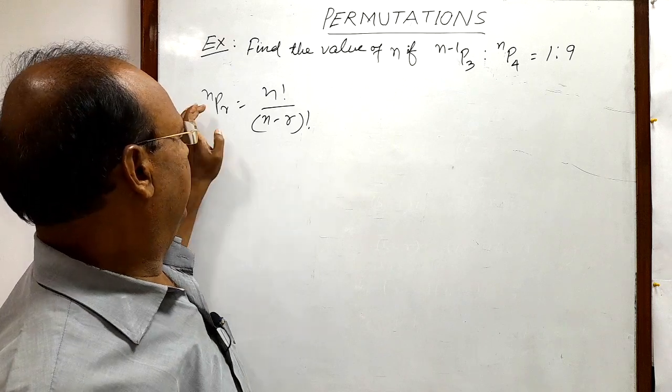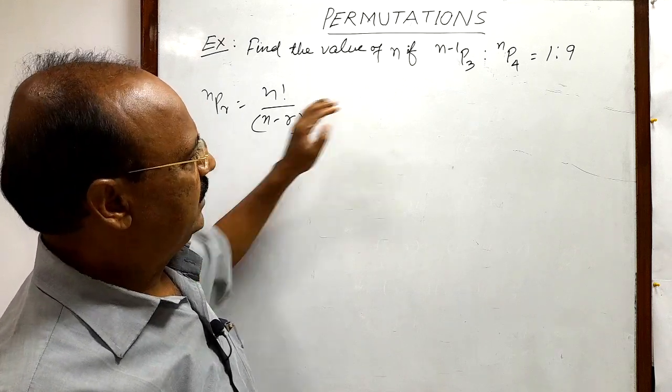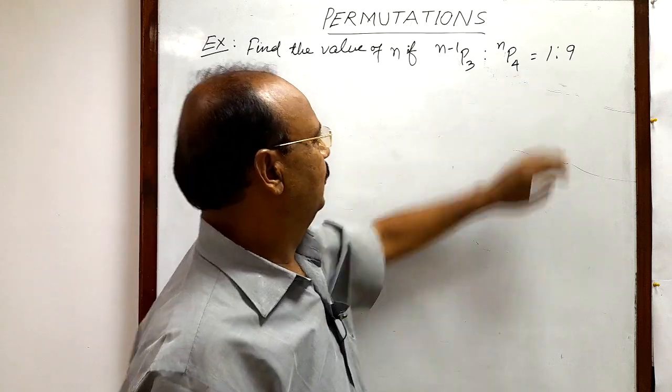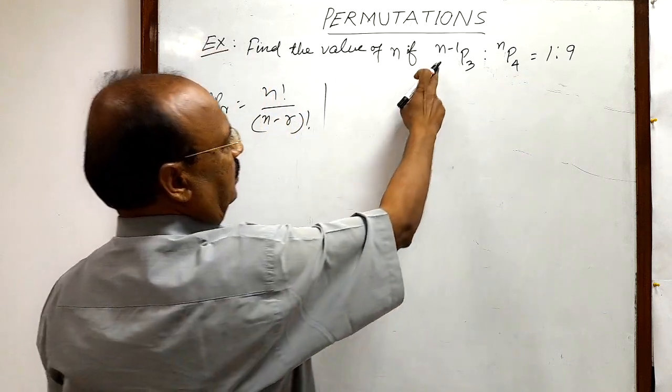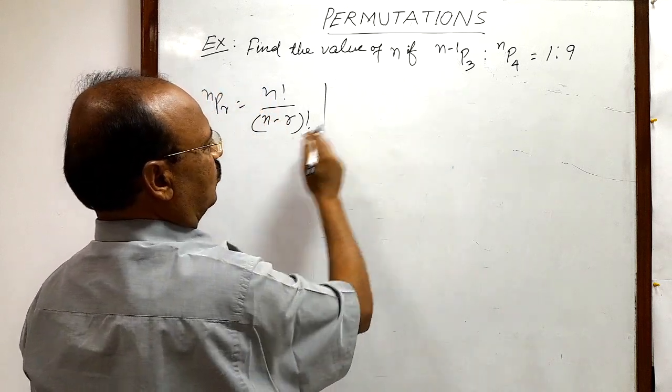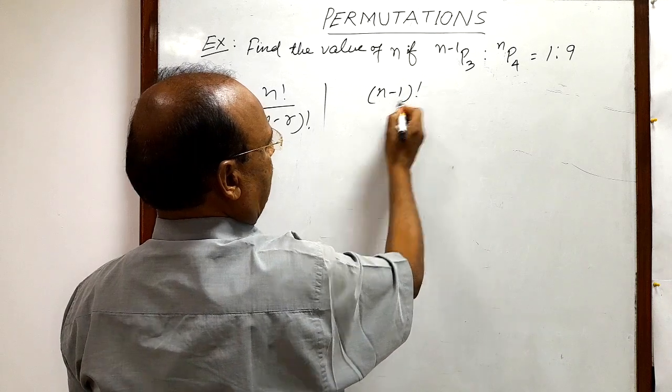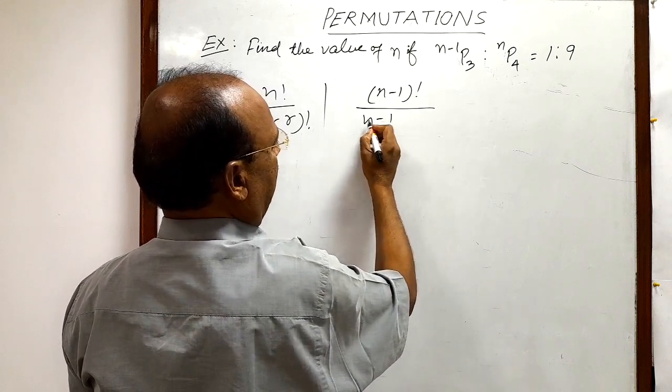Let us solve this one. Here, (n-1)P3 can be written as, by using this formula, (n-1)! divided by [(n-1) - 3]! because in place of n we have n-1 and in place of r we have 3.